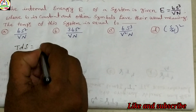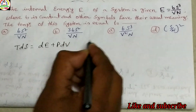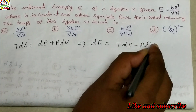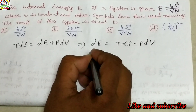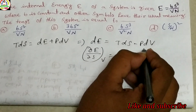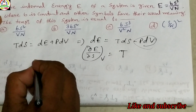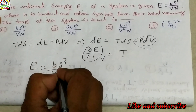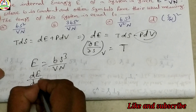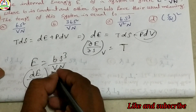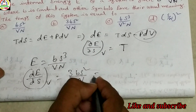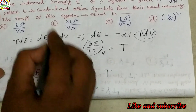From the combined first and second law: T dS = dE + p dV, so dE = T dS − p dV. Differentiating with respect to S at constant V gives (∂E/∂S) at constant V = T. Given E = bS³ / (vn), differentiating with respect to S at constant V gives 3bS² / (vn). Therefore T = 3bS² / vn, and option b is correct.